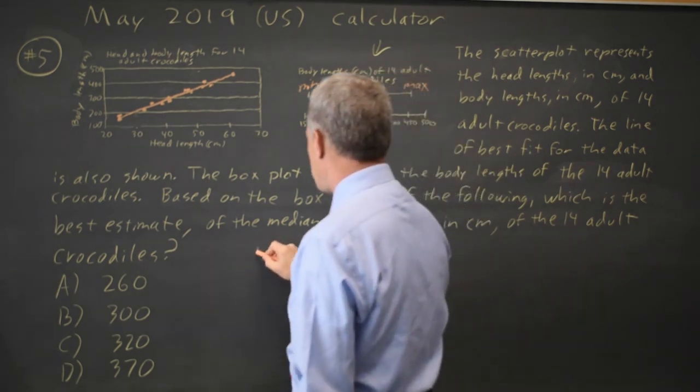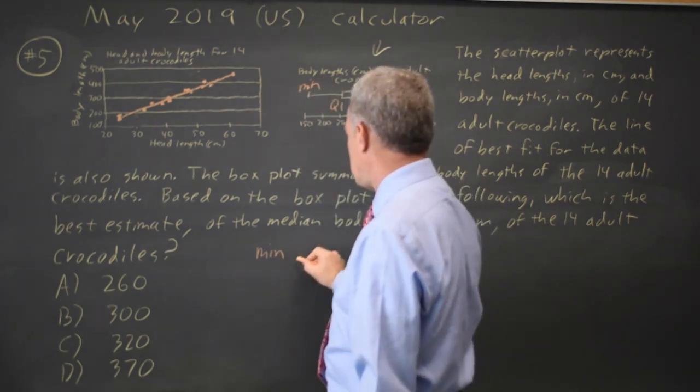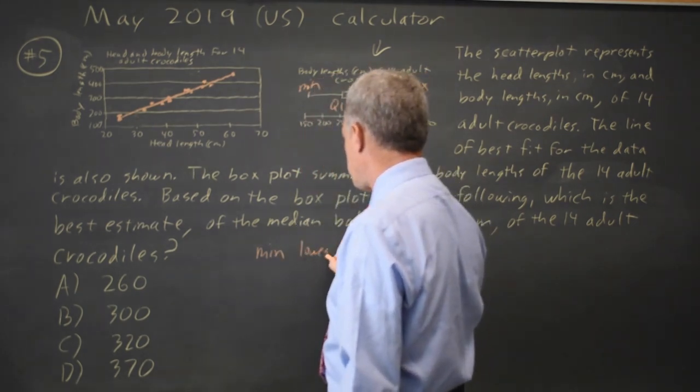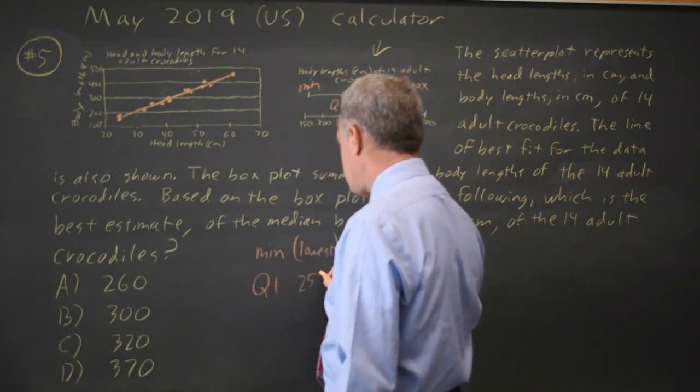The minimum is the lowest number, quartile one is the 25th percentile.